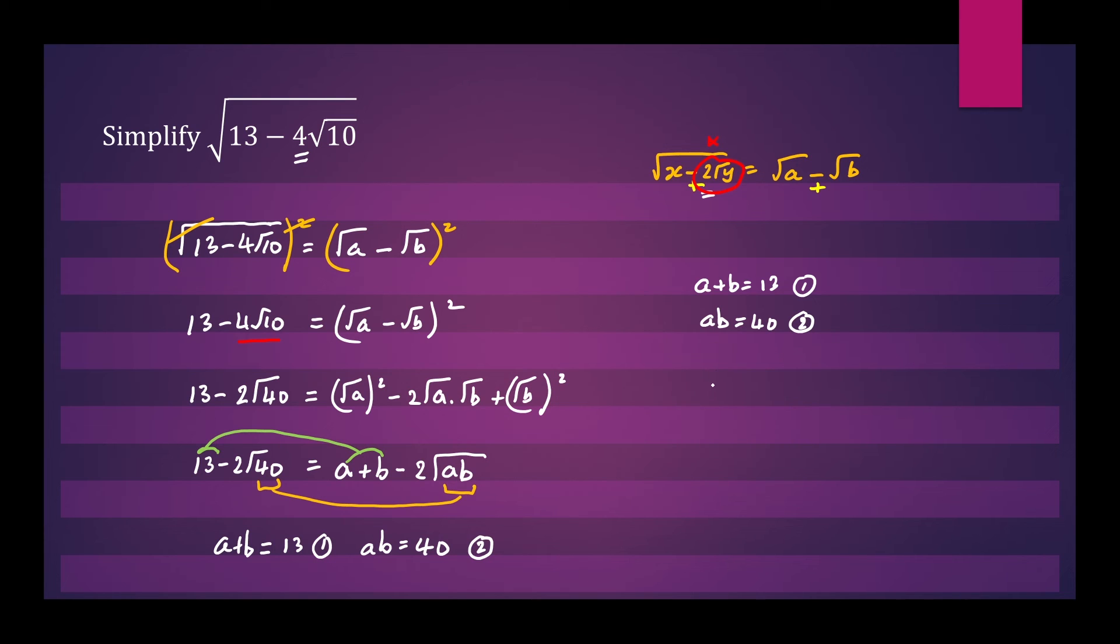So in this case a will be equal to 8 and b will be equal to 5. Let's check: 5 times 8 is 40 and 5 plus 8 is 13.